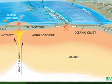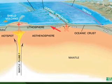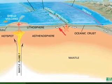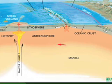The lithospheric plates are that relatively cold, rigid, potentially brittle outer part of the earth, overlying the asthenosphere, which is warmer and therefore more plastic material — not capable of generating earthquakes.